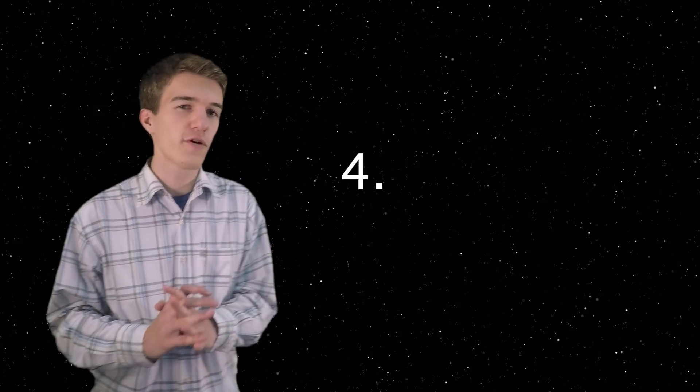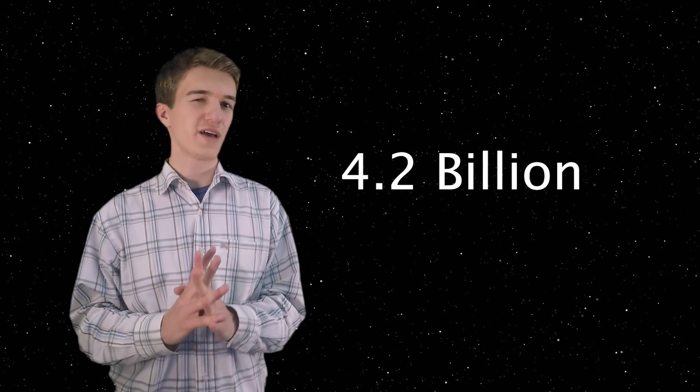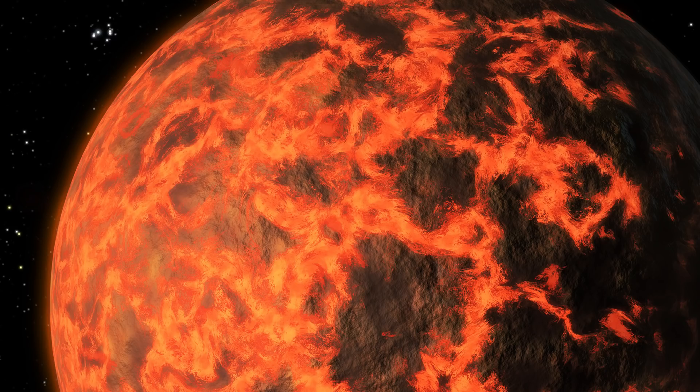So it turns out that 4.2 billion years ago, Mars actually did have a magnetic shield, just like Earth's. Back then, a long time ago, Earth and Mars were both much hotter than they are now.